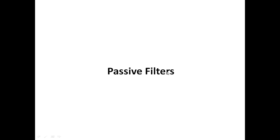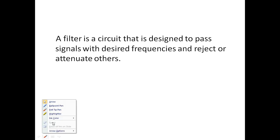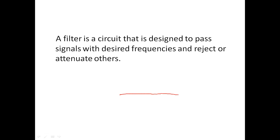In this video I am going to show you the theory of passive filters. A filter is a circuit that is designed to pass signals with desired frequencies and reject or attenuate others. For example, consider a signal in the frequency domain plotted against omega (frequency on the x-axis). A filter circuit will allow the signal only for a certain frequency range.